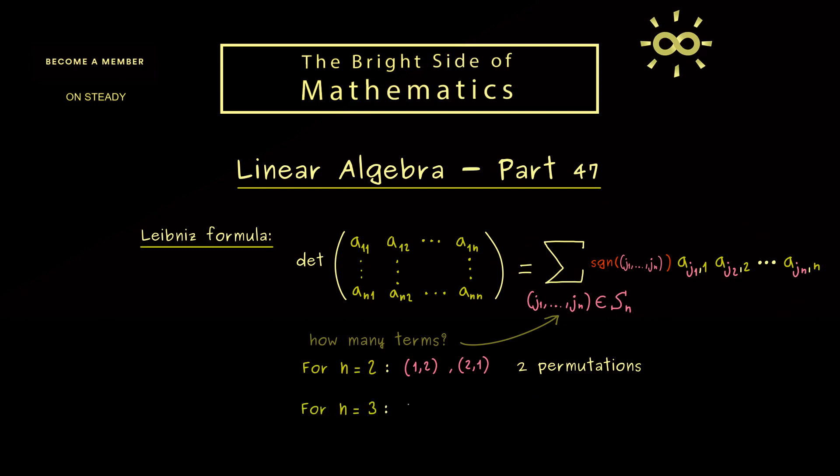However, for n equals 3, you already find a lot more. You immediately find 3 different even permutations where you just go 1, 2, 3, 1, 2, 3. And in addition, on the other hand, we find 3 odd ones where we go 2, 1, 3. This means in the 3 times 3 determinant we already have 6 terms in the whole sum. Therefore, it's much harder to remember a quick rule to calculate it.